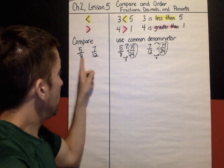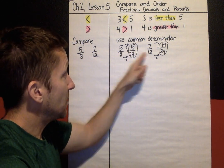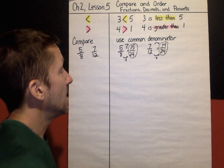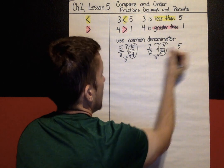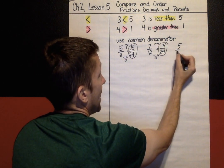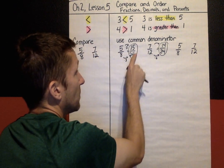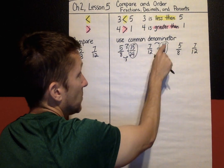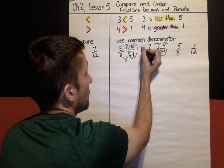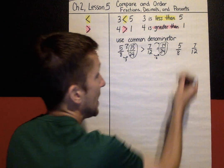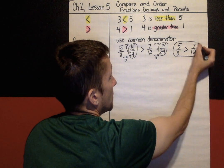Even though I changed both fractions to twenty-fourths, I want to go back and compare my original fractions of five-eighths and seven-twelfths. I know five-eighths is bigger because fifteen is greater than fourteen when I've got common denominators — fifteen twenty-fourths is more than fourteen twenty-fourths. So the inequality would go like that: five-eighths is greater than seven-twelfths.